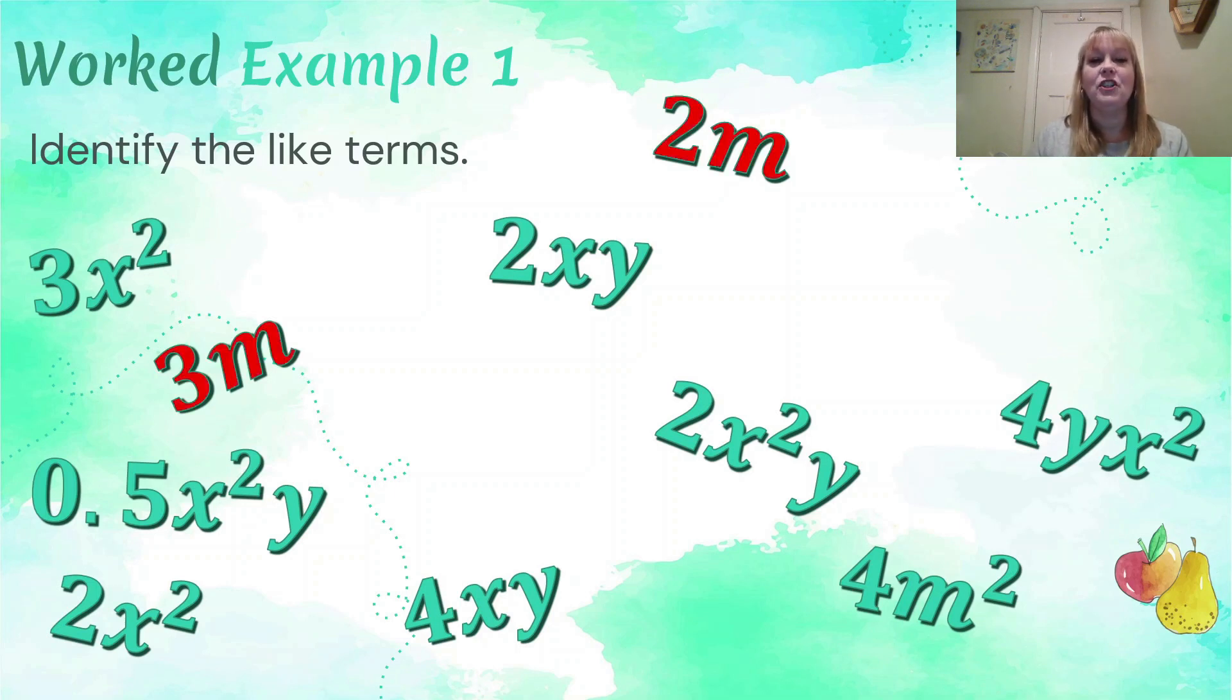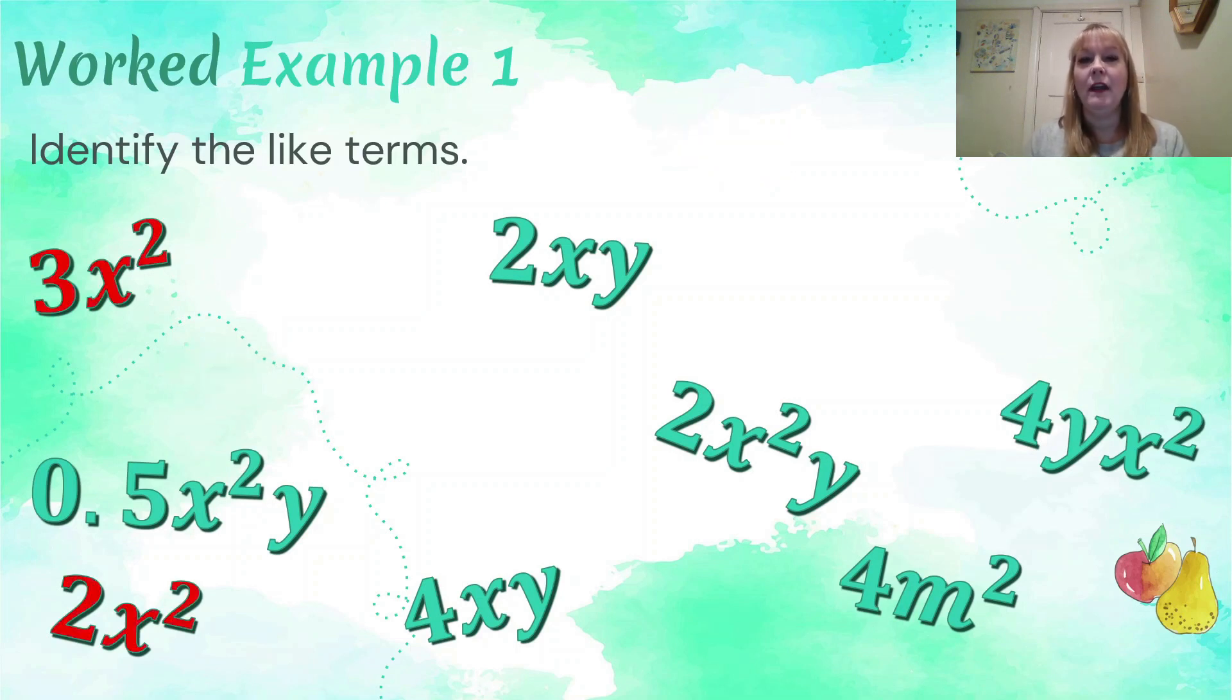Let's identify again just our terms with just an m. So you'll notice down the bottom we've got a 4m squared down here. It's not a like term with these two because this one has a power of one. We don't typically write anything with a power of one. We just assume it's got a power of one, whereas it's got a power of two, so they are not like terms. These are like terms. Okay, so we can eliminate those. You'll notice as well that even though this has got a three in front and a three in front, not interested in the number in front, so they're not like terms. So let's eliminate those now.